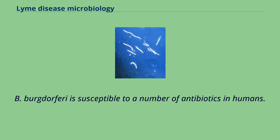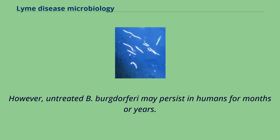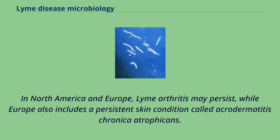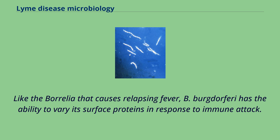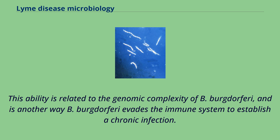B. burgdorferi is susceptible to a number of antibiotics in humans. However, untreated B. burgdorferi may persist in humans for months or years. In North America and Europe, Lyme arthritis may persist, while Europe also includes a persistent skin condition called acrodermatitis chronica atrophicans. Like the Borrelia that causes relapsing fever, B. burgdorferi has the ability to vary its surface proteins in response to immune attack. This ability is related to the genomic complexity of B. burgdorferi, and is another way B. burgdorferi evades the immune system to establish a chronic infection.